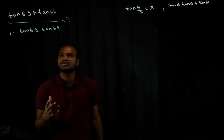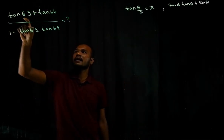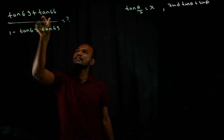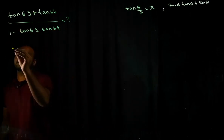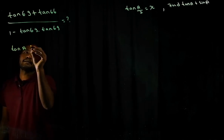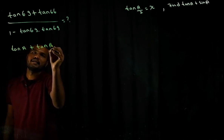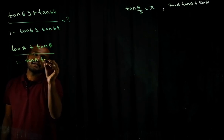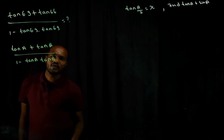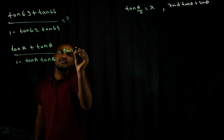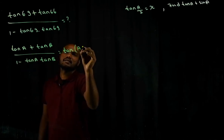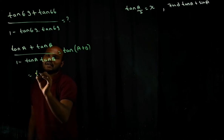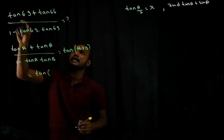In this question, (tan A + tan B)/(1 − tan A·tan B) resembles the formula for tan(A + B). So the expression equals tan(A + B).